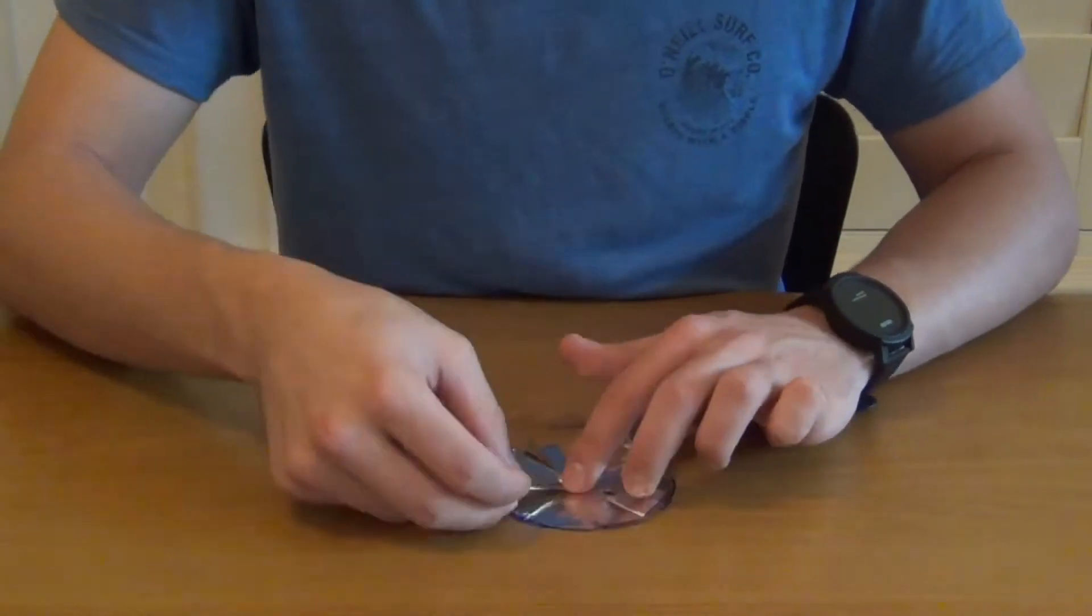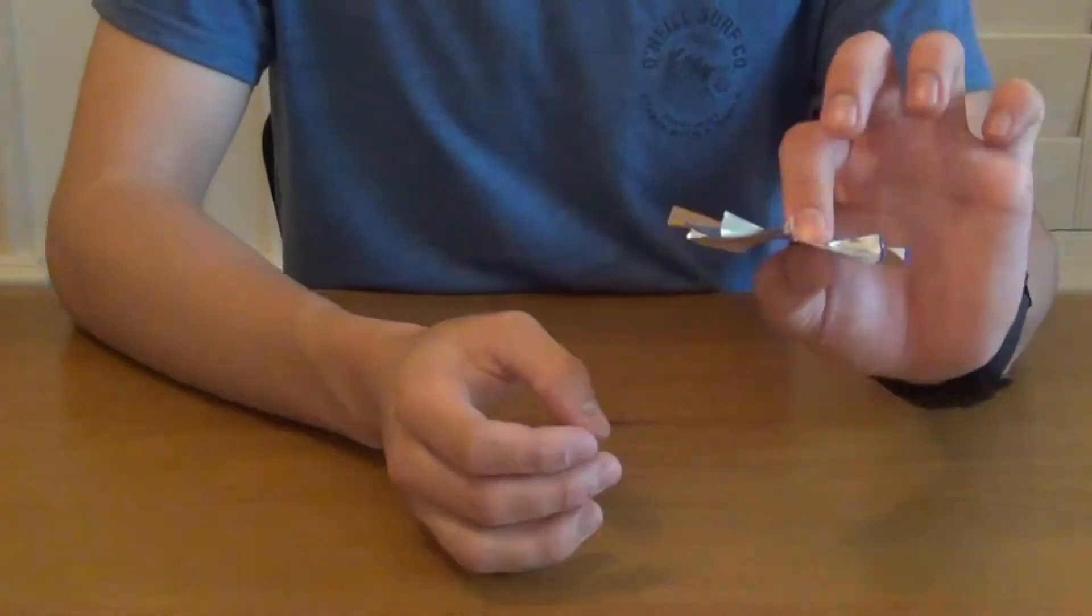Now cut six lines all around the circle. Once you've done that, fold in one side like this.